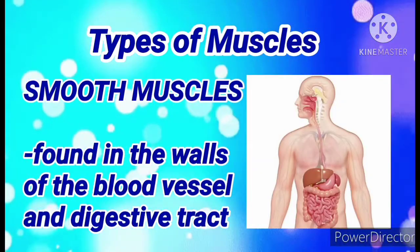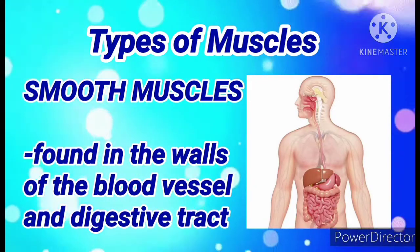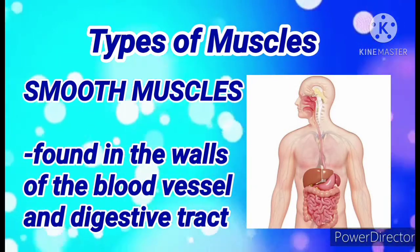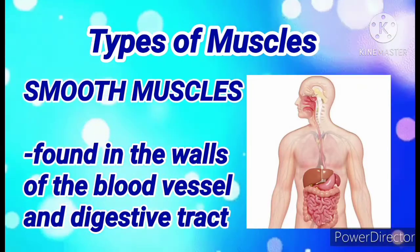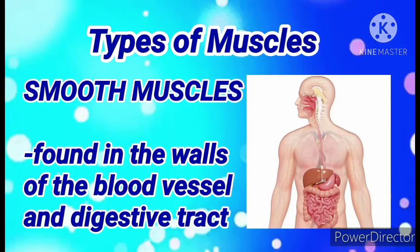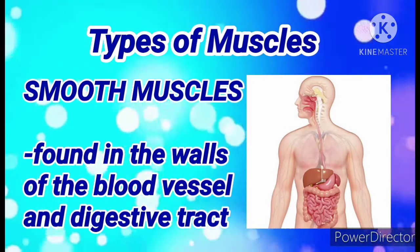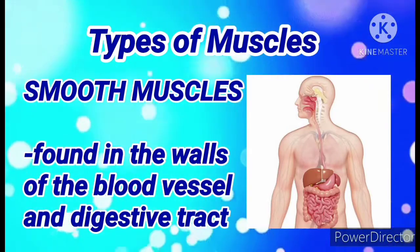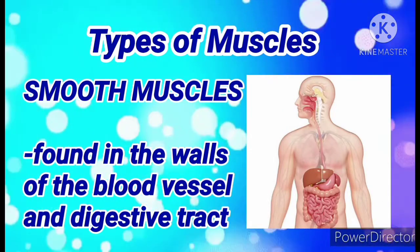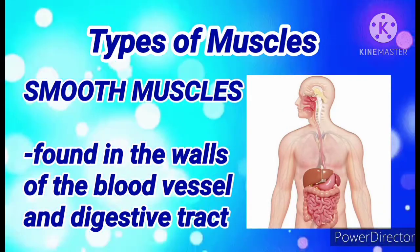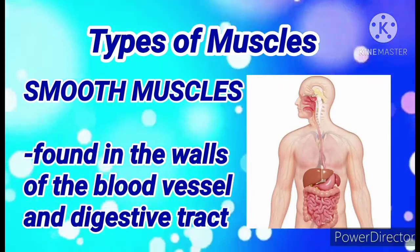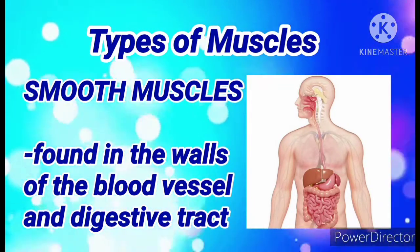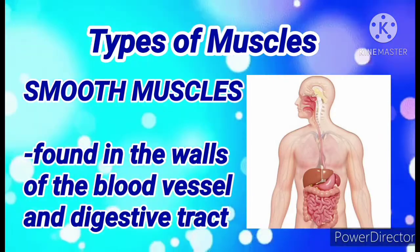The third type is the smooth muscles. Smooth muscles are found in the walls of our blood vessels and digestive tract. They are also considered involuntary muscles, and they are found in digestive tract organs like the intestine, stomach, and esophagus.